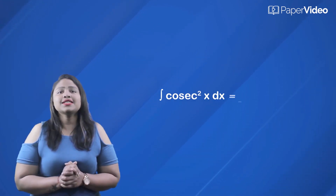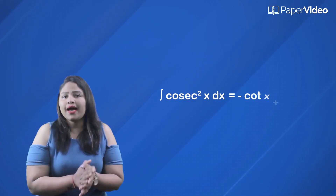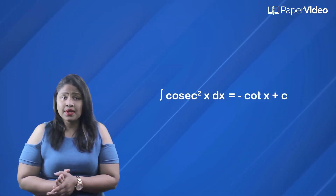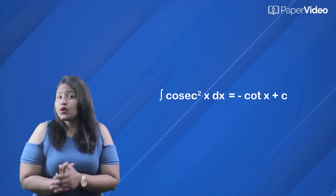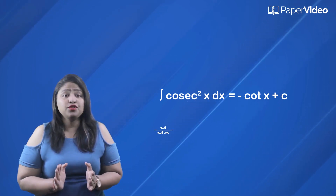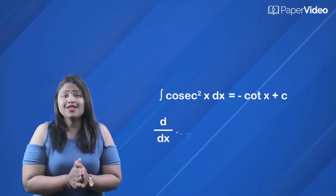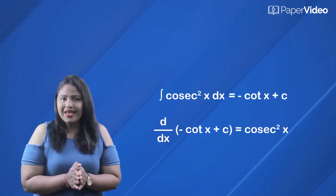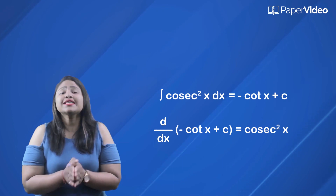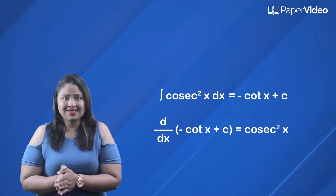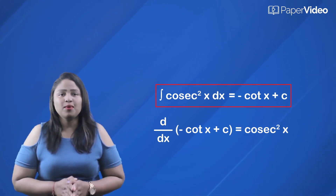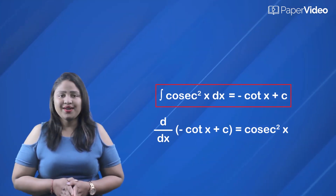Next, we have the integral of cosec squared x dx. This integral is equal to minus cot x plus c. And we know that if we differentiate minus cot x plus c, we get cosec squared x. Therefore, this standard formula is verified.